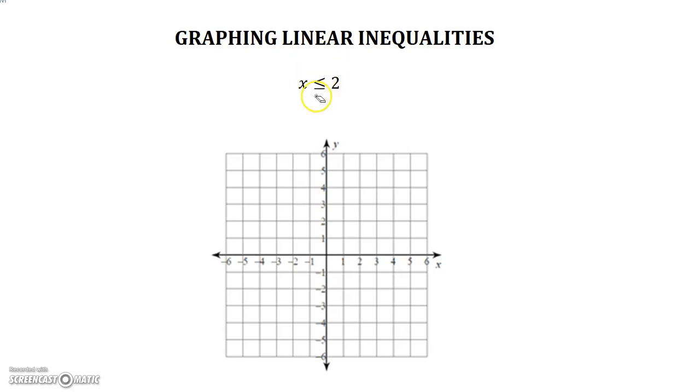x is less than or equal to 2. Now the way I like to remember the direction is that if it's x is less than or equal to a number, it's going to be on the x axis. And when it's x, it's going to be a vertical line.